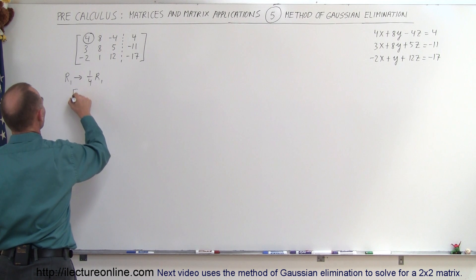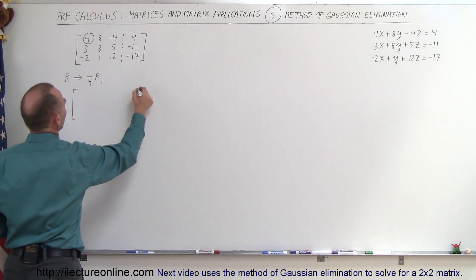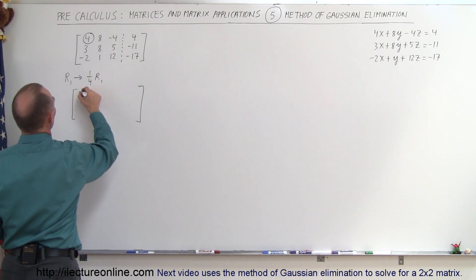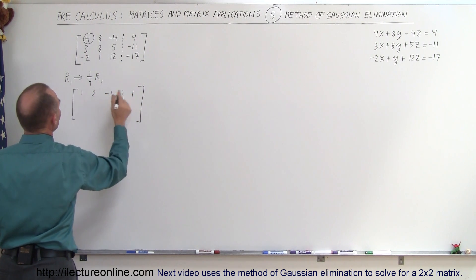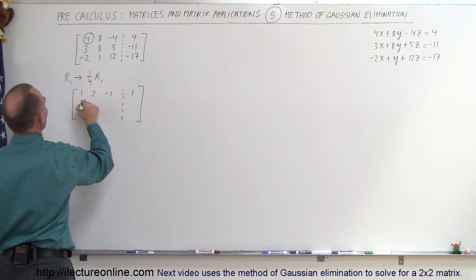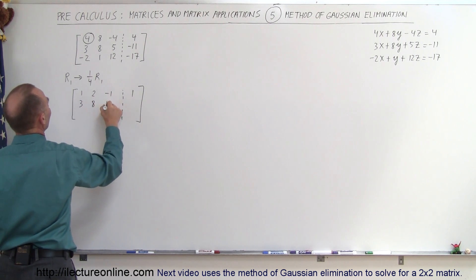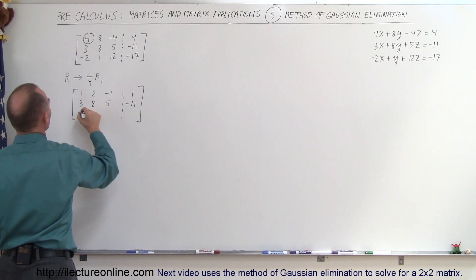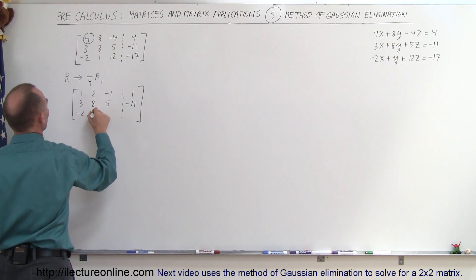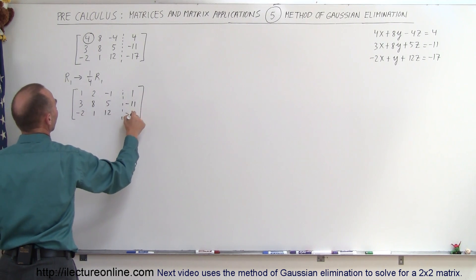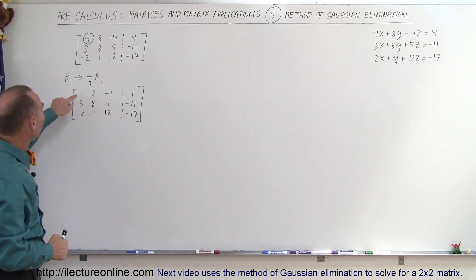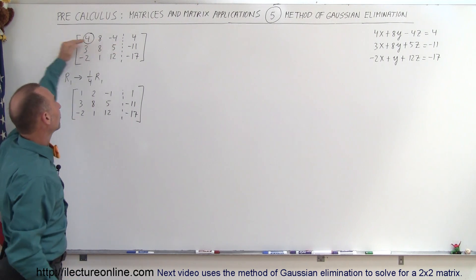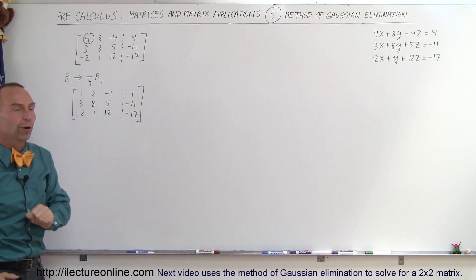So we take R1 and change it to one-quarter R1 — basically dividing that entire row by 4. If we do that, we get the following reduced matrix: a 1, a 2, a negative 1, and a 1 in the first row. Everything else stays the same: 3, 8, 5, minus 11 in row 2, and minus 2, 1, 12, minus 17 in row 3.